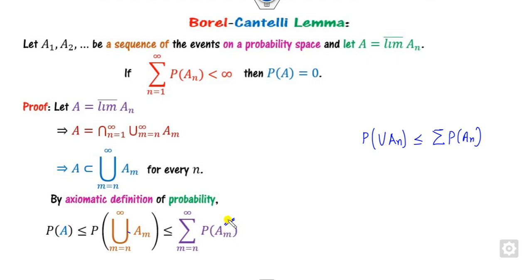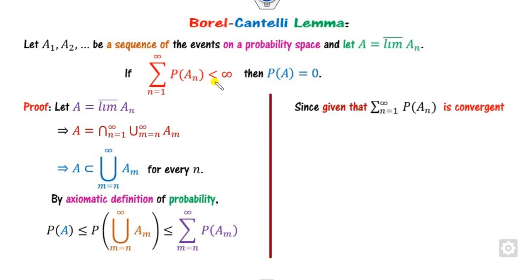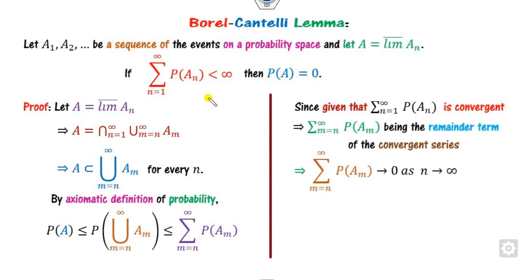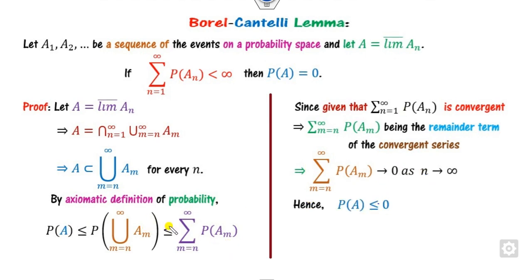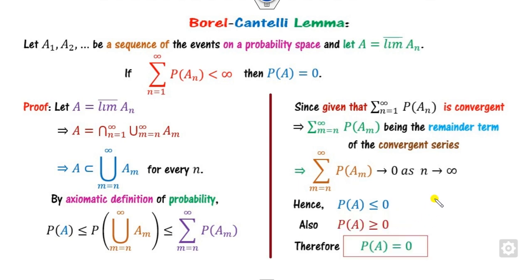Our target is to find the probability of A. The sum of the probabilities P(A_n) is given to be finite, meaning this infinite series is convergent. For a convergent series, as n approaches infinity the tail sum goes to 0. So taking the limit, this expression is less than or equal to 0.